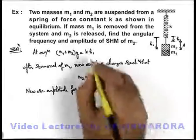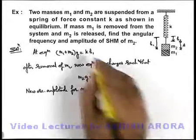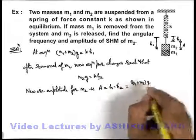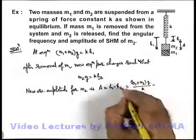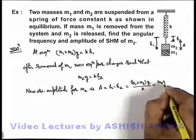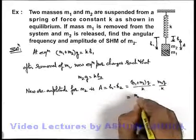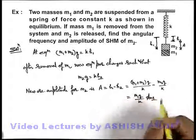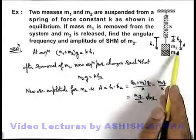When we substitute the values of h1 and h2, h1 is (m1 + m2)g/k minus h2 which is m2g/k. This gives us m1g/k, which is the amplitude of oscillation. m2 will oscillate with this amplitude.